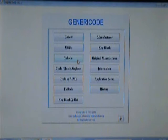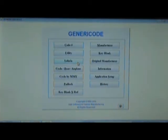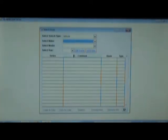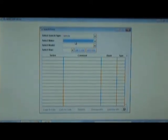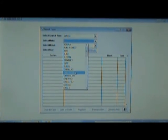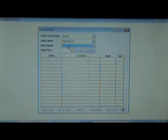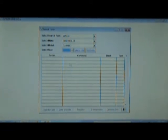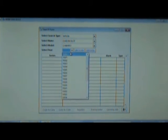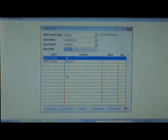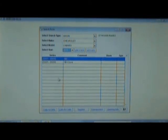We'll use our generic code program to look up our key code. From the main menu, click on the vehicle section. At this screen, we'll select our make, which would be Chevrolet. From the model menu, we'll pick Camaro. And from the year menu, we'll pick a 2010.